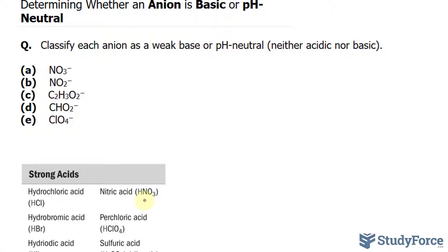Because HNO3 is a strong acid, it dissociates completely, forming an anion that is pH neutral. So the example here is pH neutral.